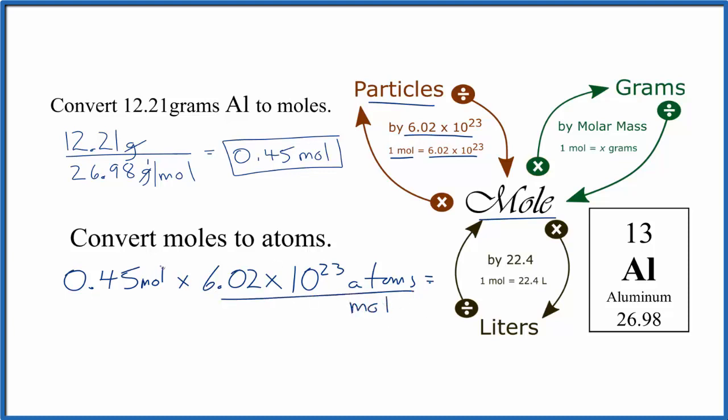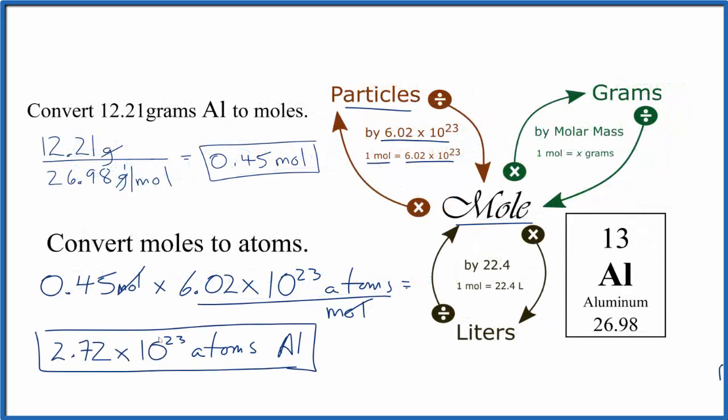So when we do the math, moles will cancel out, we'll be left with atoms, and we'll get this: 2.72 times 10 to the 23rd atoms of aluminum.